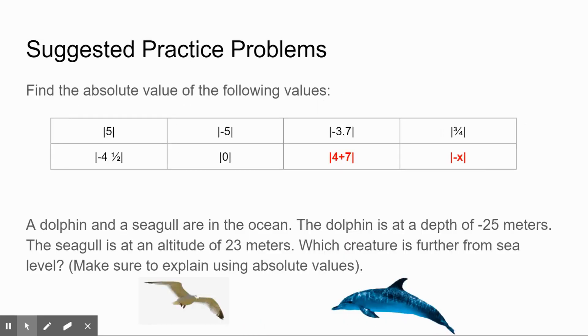We're going to leave you with some suggested practice problems. We have a table of eight different values. You're going to find the absolute value of each of those. The ones in red are going to be a little bit trickier, but if you think about what an absolute value is, they shouldn't be too hard. Final one is another word problem. You're going to compare them, explain using absolute values. Otherwise, there's no real point to it, is there? Thank you for watching. Good luck.